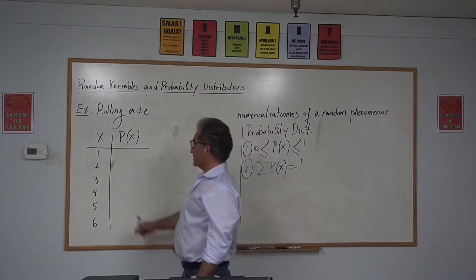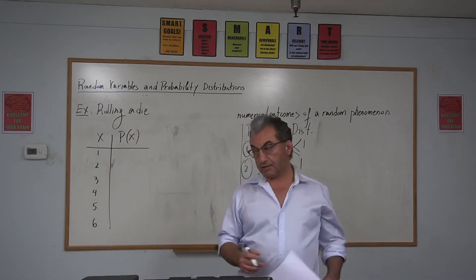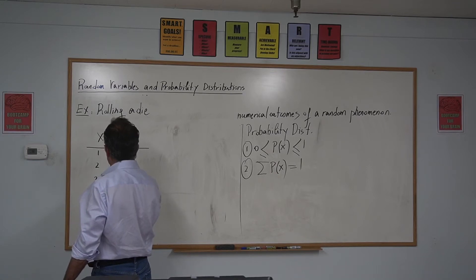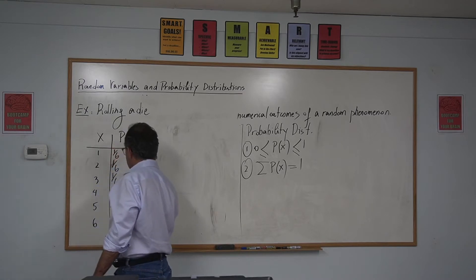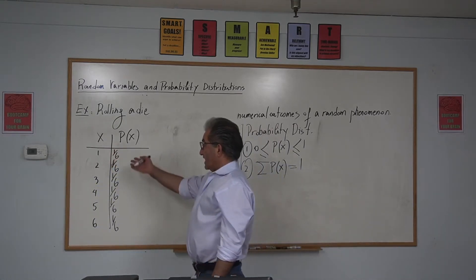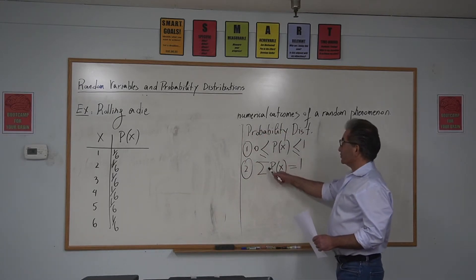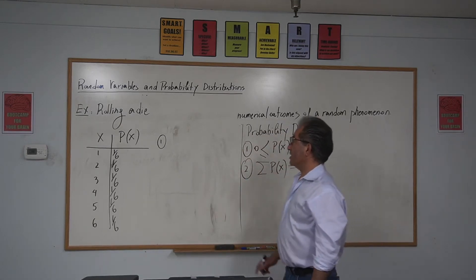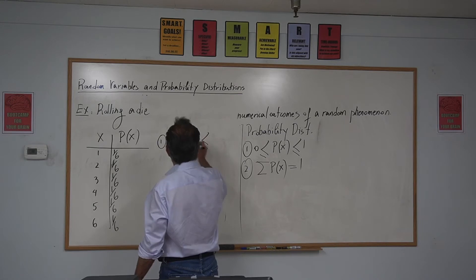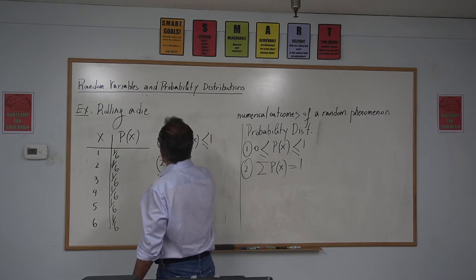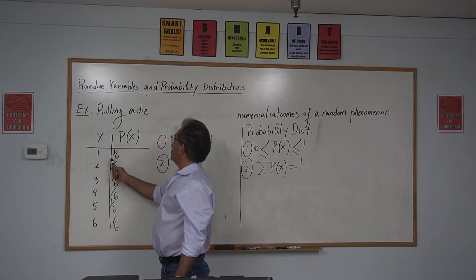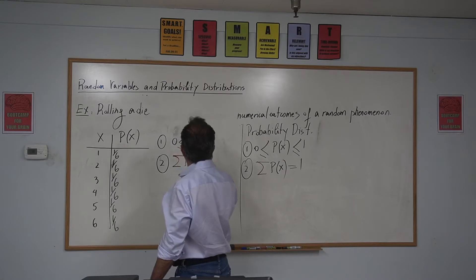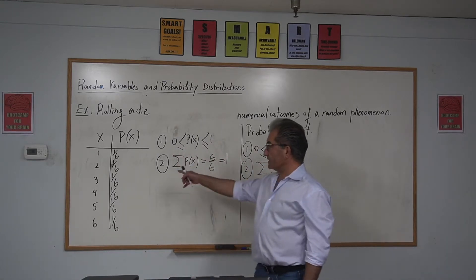Now let's get the probability of each one. What's the probability that I roll a die and it shows 1? We all know that's 1/6, 1/6, 1/6, 1/6, 1/6, and 1/6. Now, if I ask you whether this is a probability distribution, you need to check the two conditions. Number one: does each probability fall between 0 and 1? Yes. Number two: if I add all the probabilities, 1+1+1+1+1+1 six times is 6/6, which is 1. So this is a probability distribution.